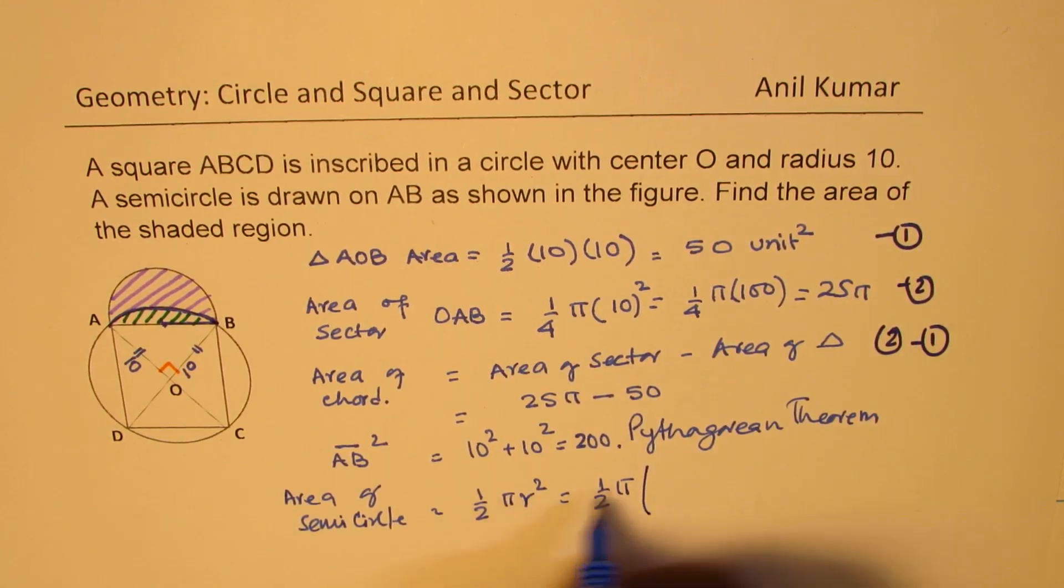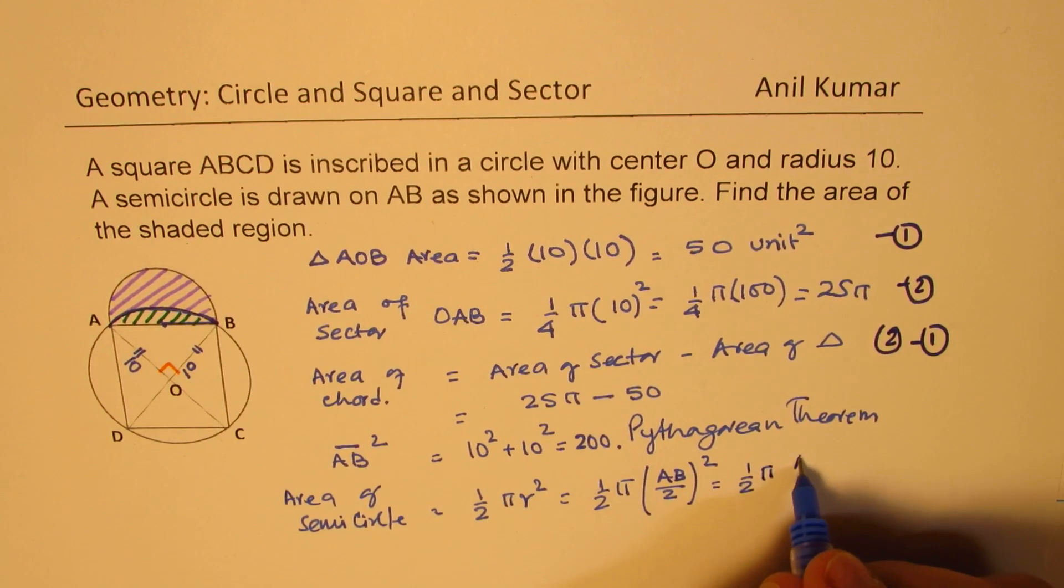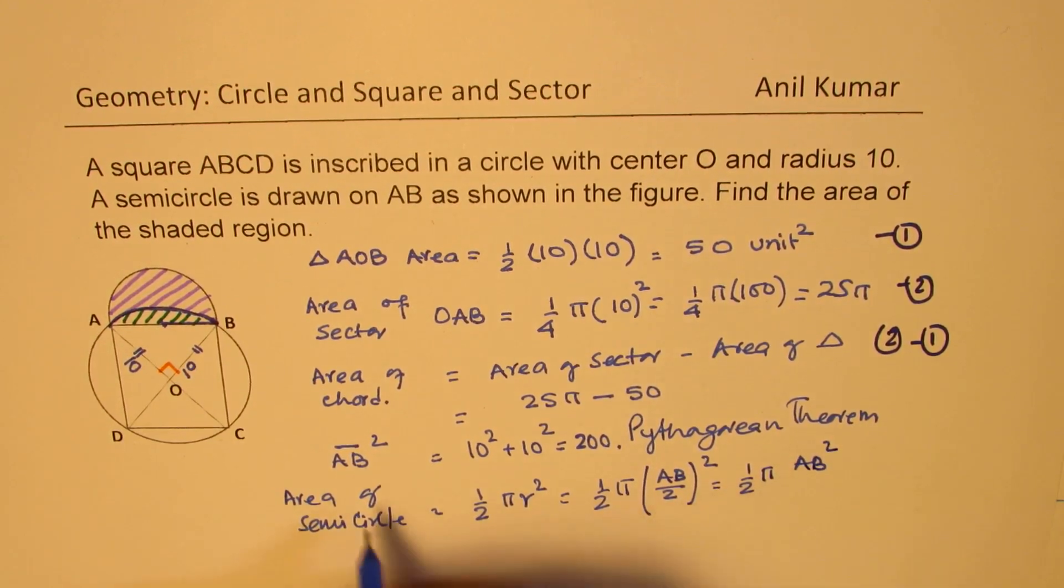So we can write radius as AB/2, half of AB squared. Is it clear? So when you open this, you get half of π times AB². And that's why we didn't really take this square root here.